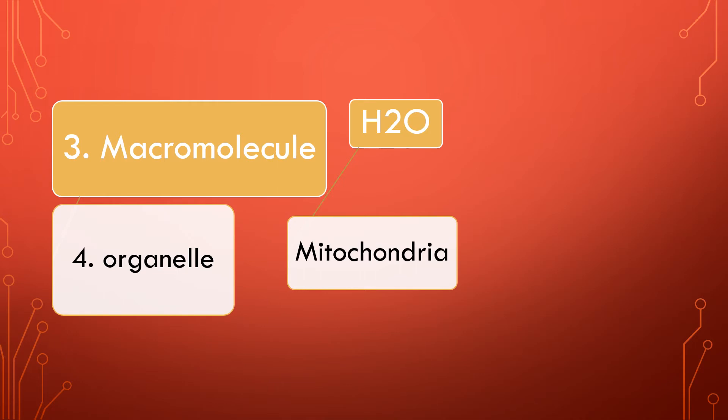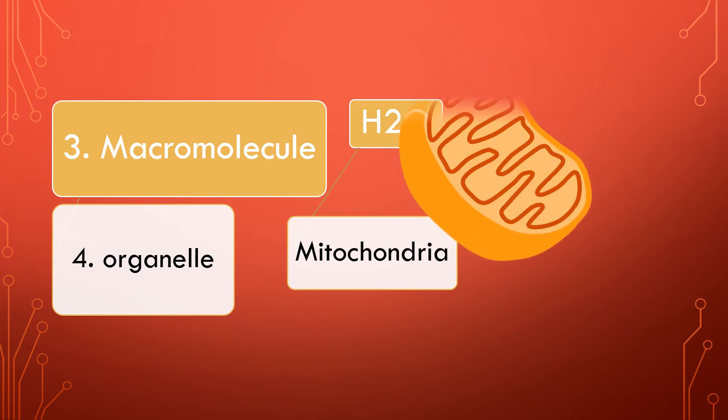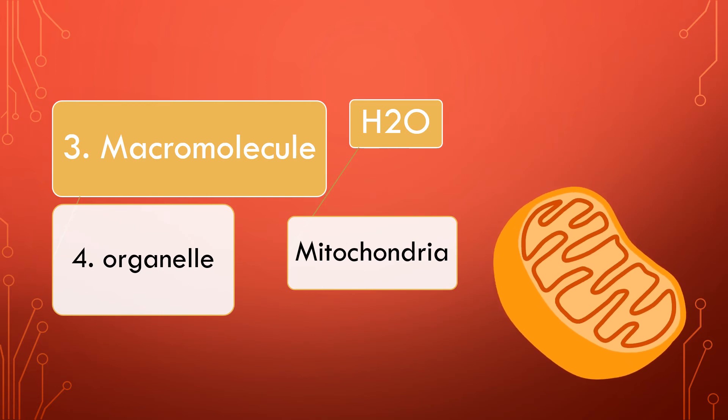H2O, water. You see there are two atoms of hydrogen and one atom of oxygen. The fourth level is organelle. Organelles are these structures found within the cells, like mitochondria. So that is the fourth organizational level of physiology.